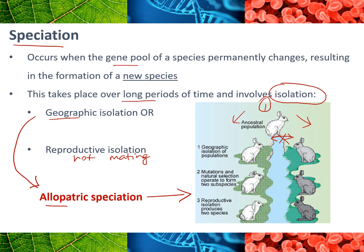The rabbit river example is a specific example called allopatric speciation — speciation that occurs due to geographic isolation. Over long periods of time, the separated populations undergo separate, completely random mutations. Each species goes through its own version of natural selection, and eventually they become so different from each other that they can no longer breed to produce fertile offspring, which is the definition of a species.